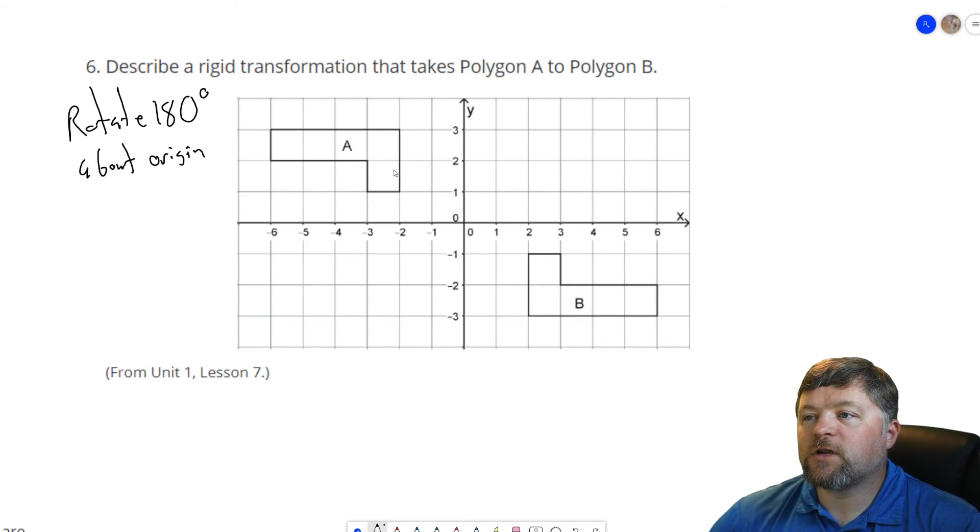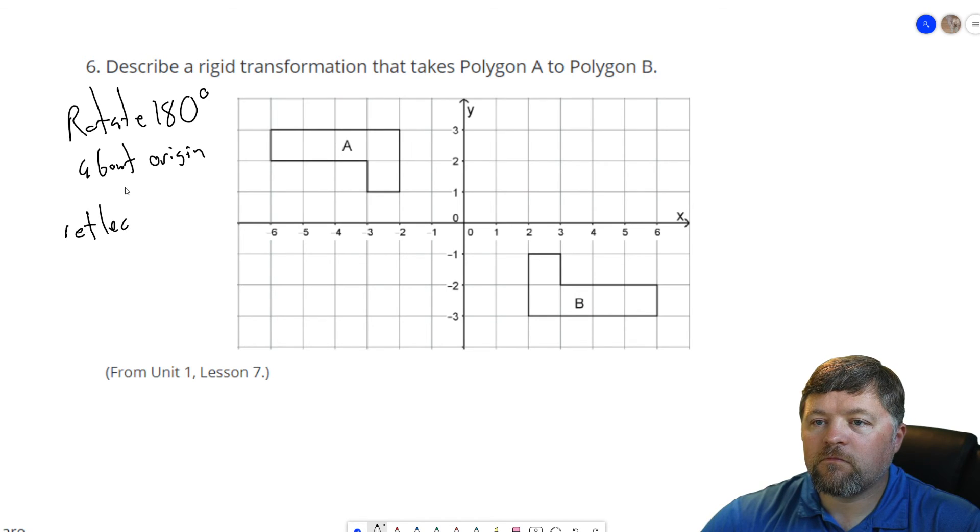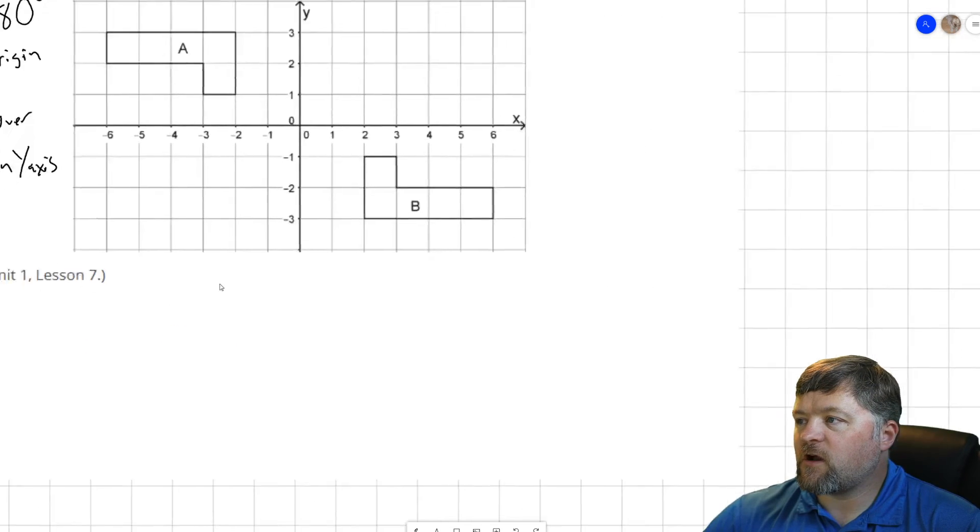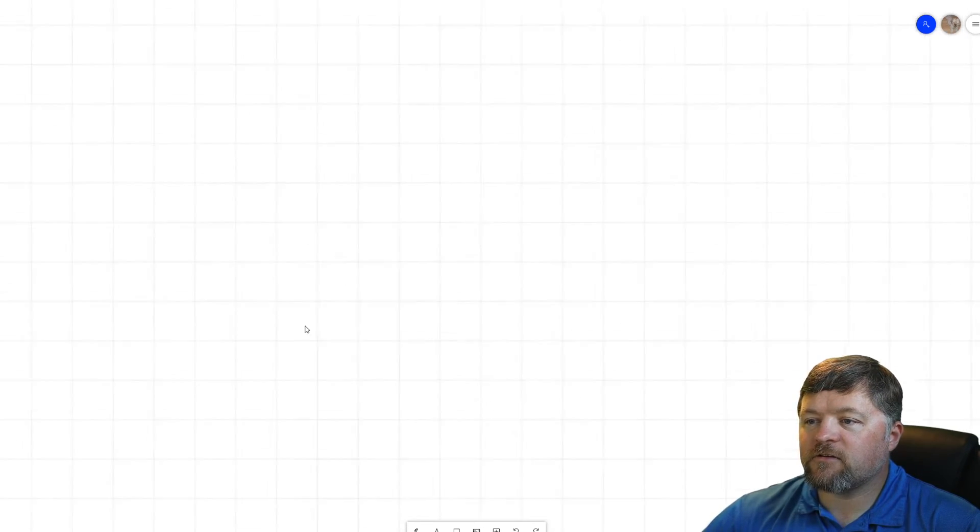The other thing we could do is we could reflect this figure over the y-axis and then the x-axis, or over the x-axis and then the y-axis like we did a couple problems ago. Reflect over x, then y. So by doing two reflections, we could take figure A and put it onto figure B. So there are two different options for this. You could have had either. They're both acceptable.